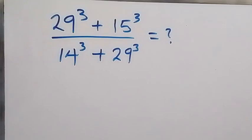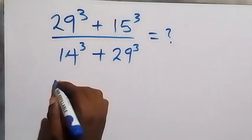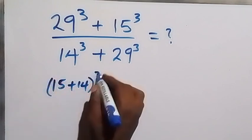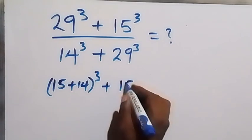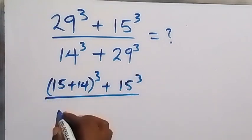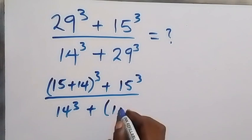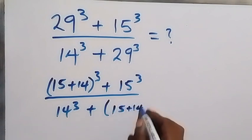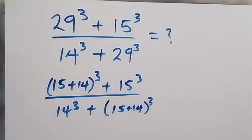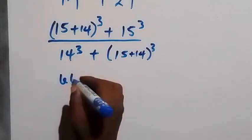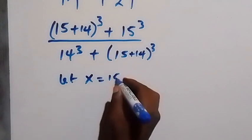Hello, you are welcome. How to solve this nice algebra problem — we want to simplify without a calculator. We write 29 as 15 plus 14, raised to power 3, then plus 15 raised to power 3, over 14 raised to power 3, plus 29 written again as 15 plus 14, raised to power 3.